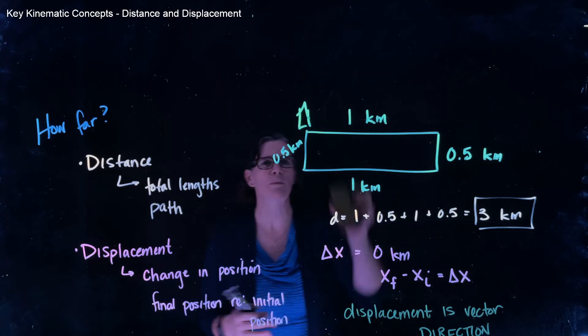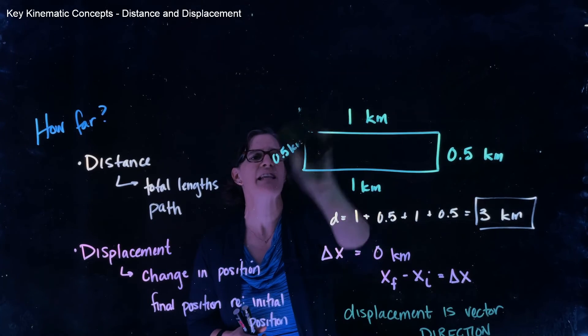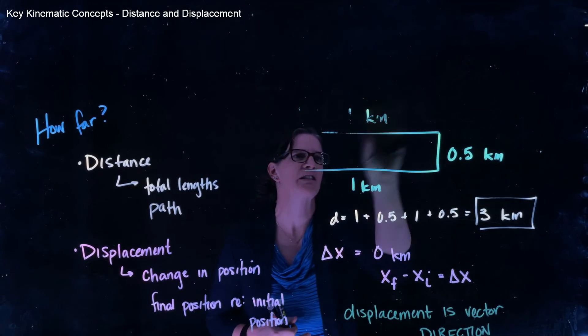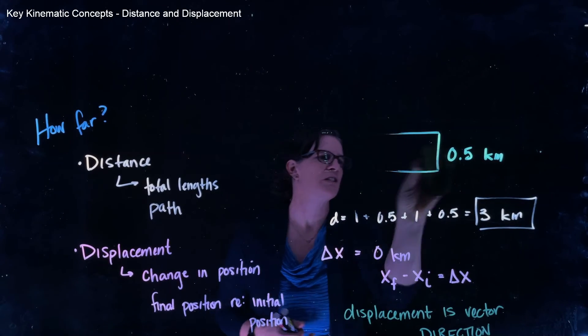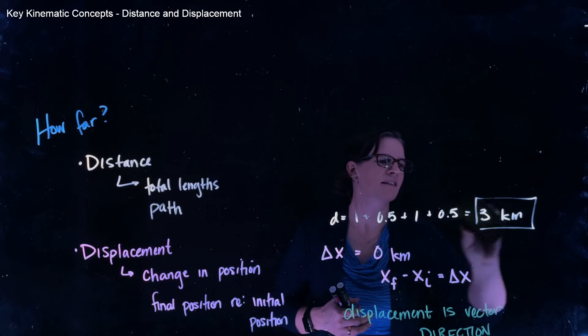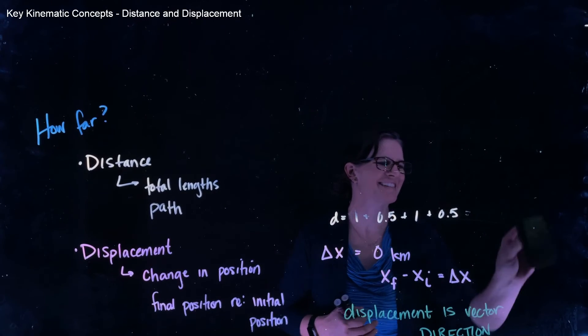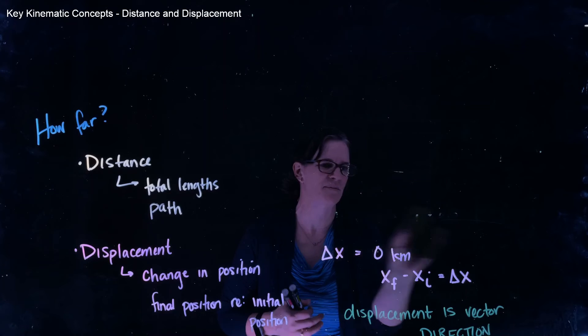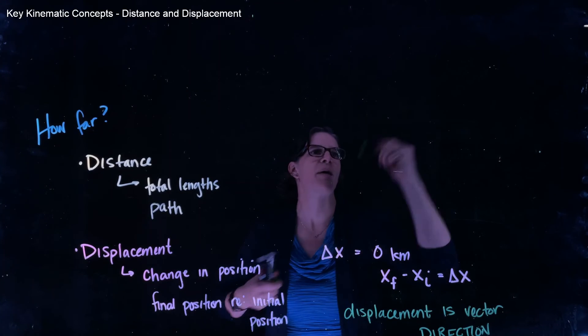So real briefly, just to give you that sense of how we use direction to describe displacement, I'm going to just look at this farmer walking to the left, or east and west of her farmhouse. So if we imagine, here's our farmhouse,